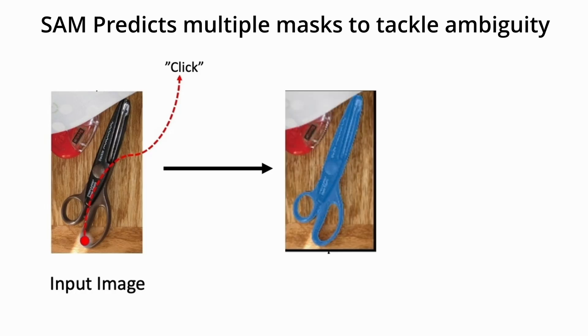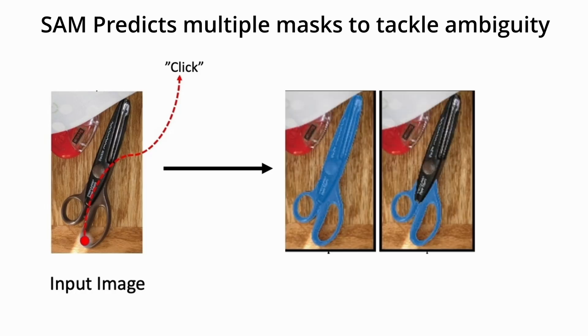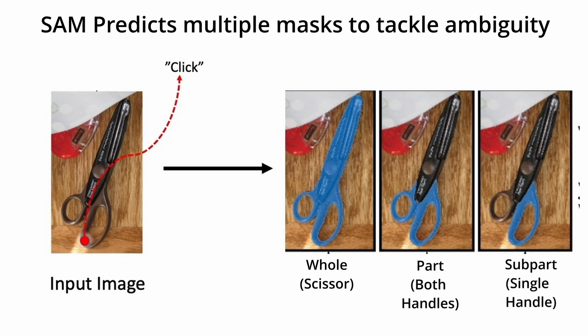The three segmentation masks capture the whole, the part, or the sub-part of the queried object. For example, given an image of a scissor with a prompt click, one mask may identify the entire scissor, one may identify the two handles, and the third may identify just the right handle. That was SAM1's decoder, which only segments static images.